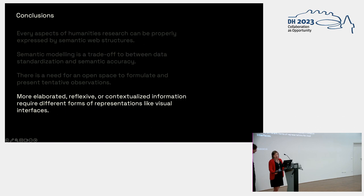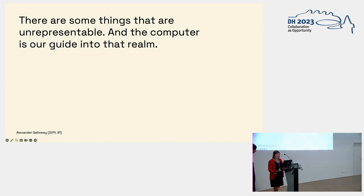We would like to end with the hypothesis of Galloway to trigger the discussion: are some things simply not representable, and is the computer really our indicator for that? Or to formulate it differently: is humanistic research translatable into a machine-readable format? And does it need to be? Thank you very much.